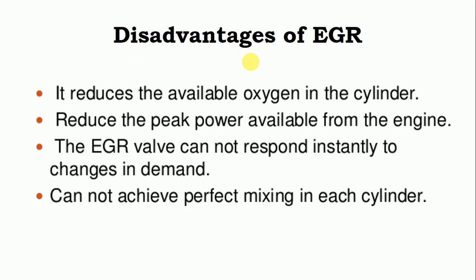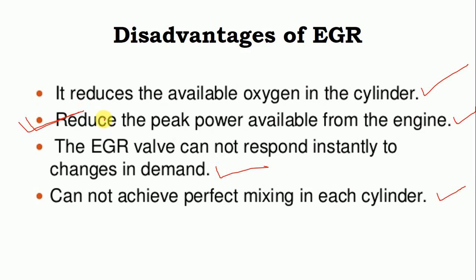The disadvantages of the EGR system are: it reduces the available oxygen in the cylinder; it reduces the peak power available from the engine — for example, if the engine produces 100 kilowatts before EGR, after providing EGR there will be a reduction in maximum power; the EGR valve cannot respond instantly to changes in demand, making it less sensitive; and it cannot achieve perfect mixing of air, fuel, and exhaust gases in each cylinder. The major disadvantage is that peak power availability will be reduced. I hope you understood — thank you very much for listening.